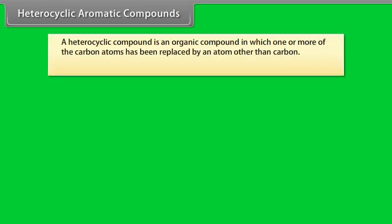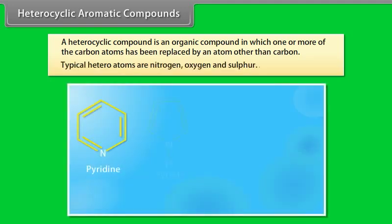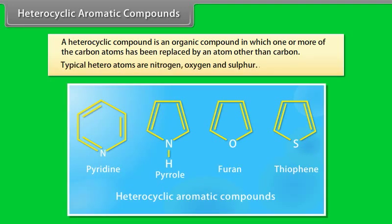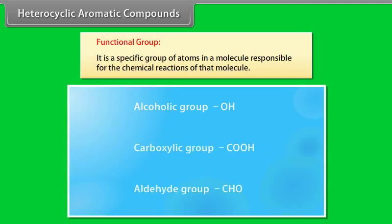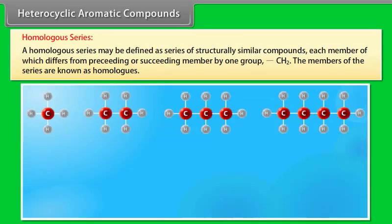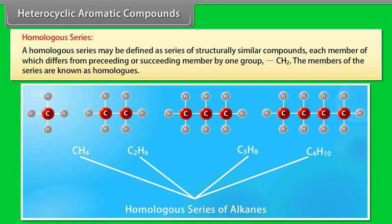A heterocyclic compound is an organic compound in which one or more of the carbon atoms have been replaced by an atom other than carbon. Typical heteroatoms are nitrogen, oxygen, and sulfur. Functional group is a specific group of atoms in a molecule responsible for the chemical reactions of that molecule. A homologous series may be defined as a series of structurally similar compounds, each member of which differs from the preceding or succeeding member by one group CH2. The members of the series are known as homologs.